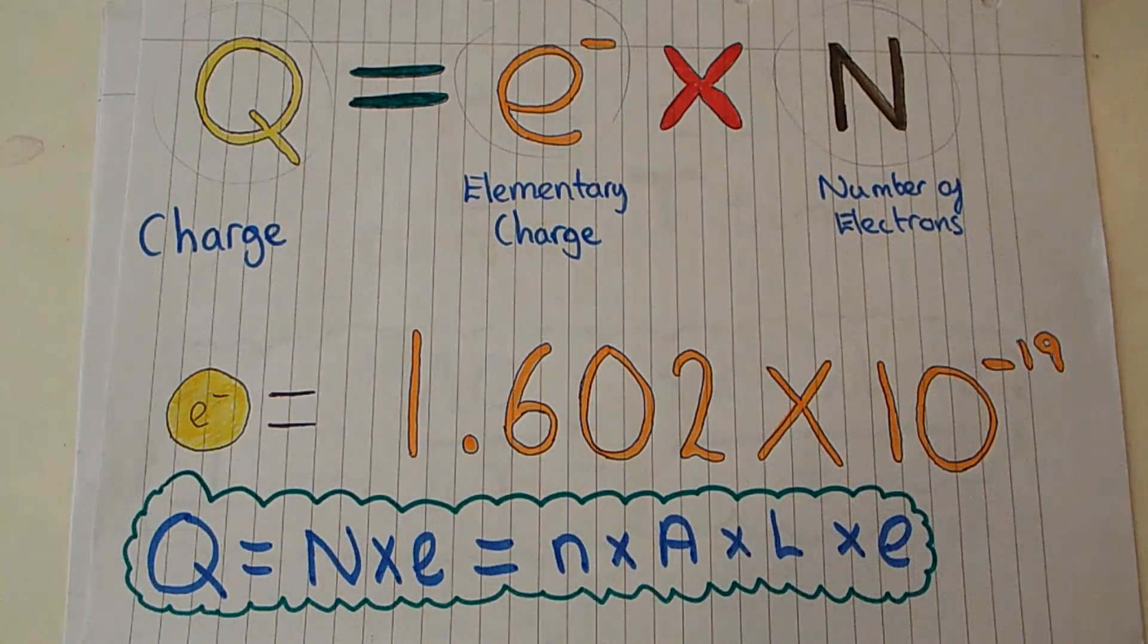The electrons all have an identical charge. This charge is very small, it's 1.602 times 10 to the minus 19 coulombs. That means one coulomb of charge would be a total of 1.602 times 10 to the 19 electrons.